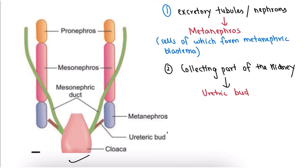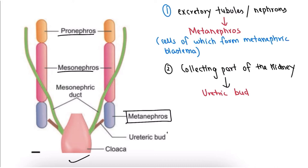This image gives us a clear idea of how kidneys are developed in an embryo. The first structure to be formed is the pronephros, which acts as the functional kidney in the embryo until the formation of the mesonephros. When the mesonephros starts functioning as the functional kidney, the pronephros degenerates. The mesonephros then functions as the kidney until the formation of the metanephros, which is our main structure and leads to the development of the permanent kidney. As the metanephros starts functioning, the mesonephros also degenerates.